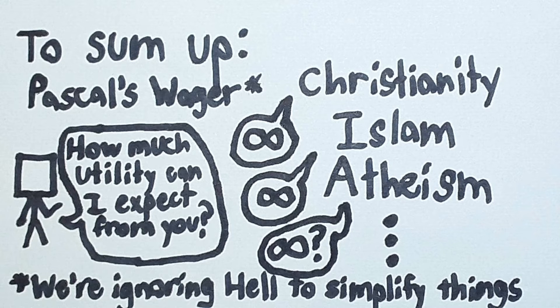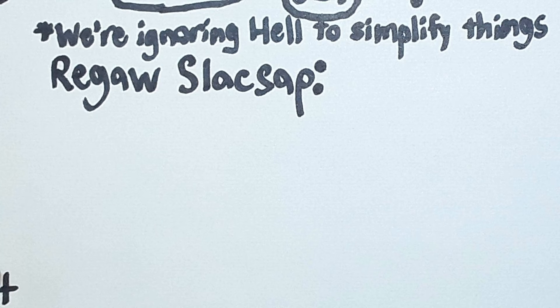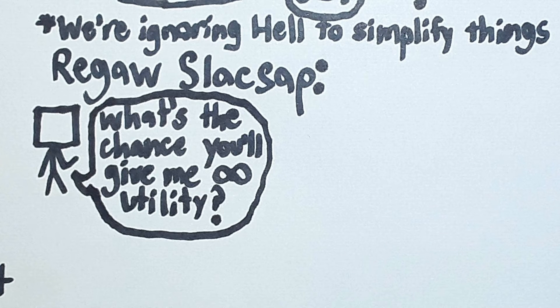So we're going to invert the wager and get the rejaw slack slap, which is Pascal's wager spelled backwards and it's an amazing name, stop judging it. Here, I ask what the probability is that each worldview will be able to get me infinite utility.